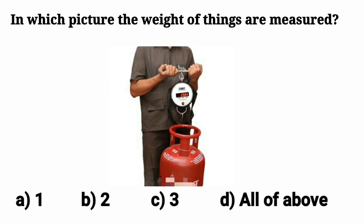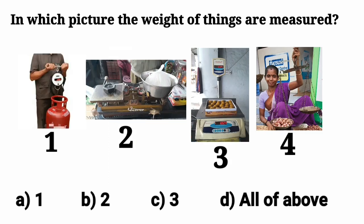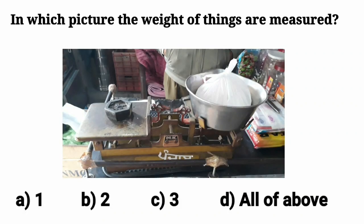In second pic, what do you see kids? Yes, in the second pic, the ration is being weighed on a balanced scale.